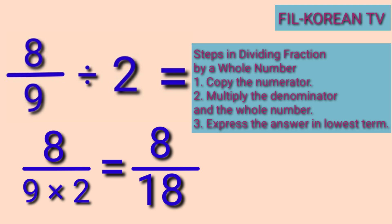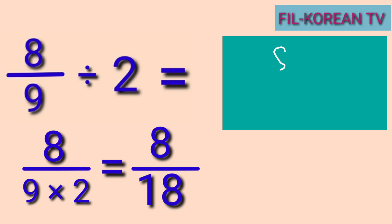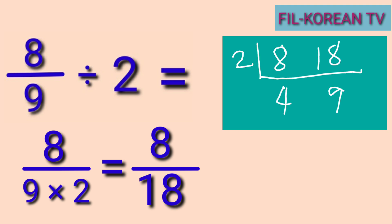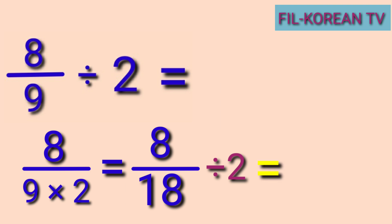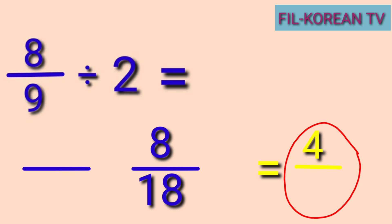Next step: reduce the fraction to lowest term. The fraction 8 over 18 can be reduced. We divide the numerator 8 and the denominator 18 by their GCF. The GCF of 8 and 18 is 2. So 8 divided by 2 equals 4, and 18 divided by 2 equals 9. The answer is 4 ninths.